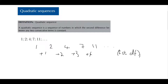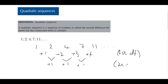We put that in brackets. We can see that none of these numbers are common, so there is actually a second level difference. How do we get from 1 to 2? We add 1. From 2 to 3, we add 1. From 3 to 4, we add 1. All of these numbers are the same, so we have a second order difference that is common — pretty straightforward and easy to understand.